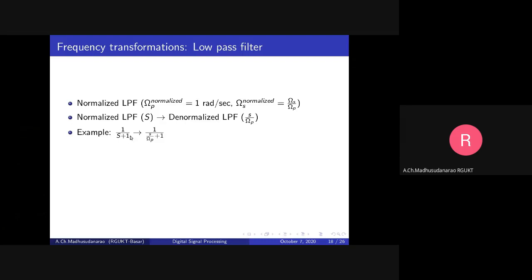For example, consider a first-order low pass filter: H(S) = 1/(S+1). To apply the transformation, replace S with S/Omega_P — just a notation change from capital S to small s. If you replace S with S/Omega_P, you get the transformed expression. Let's verify: S = 0 implies small s = 0, which checks out — zero frequency maps to zero.